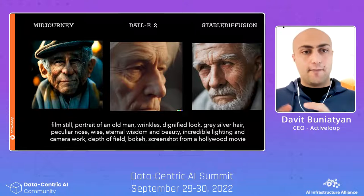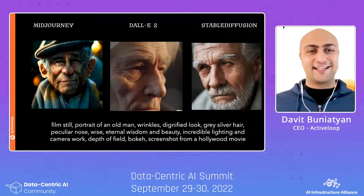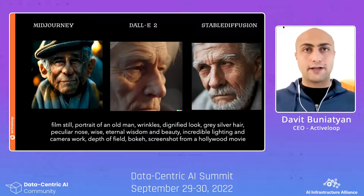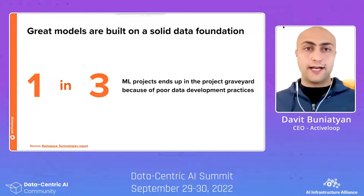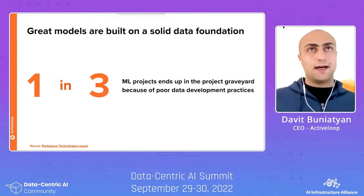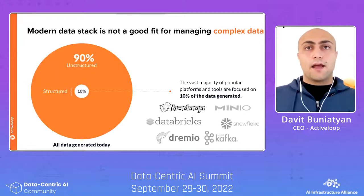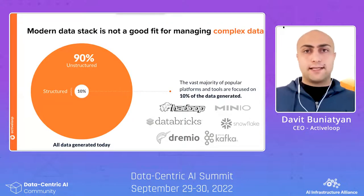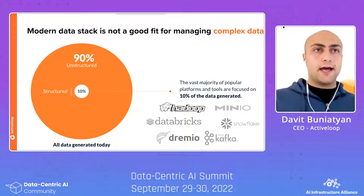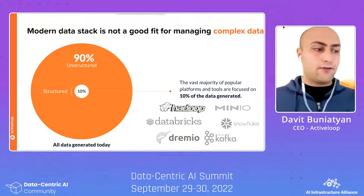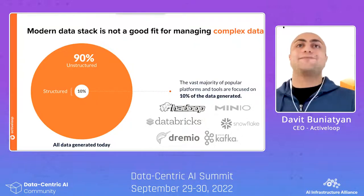At every model you see in deep learning over the past 10 years, there is a dataset sitting behind the scenes that made those models possible. Apparently, one in three ML projects fail because of poor data development practices — having problems building datasets and fitting them into machine learning frameworks. You have all these awesome databases, data warehouses, and data lakes specialized for analytical workloads, but they are not well suited for complex data processing where deep learning shines.